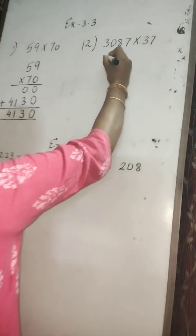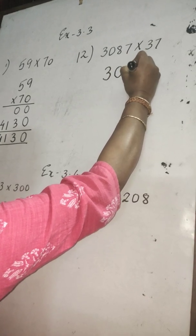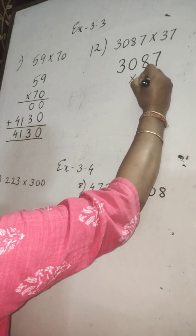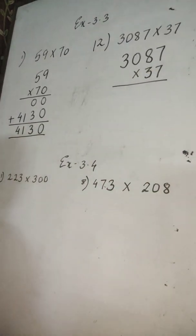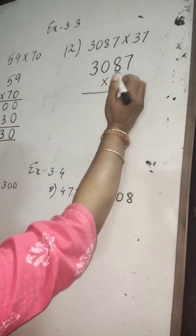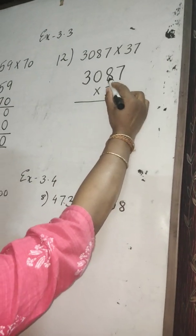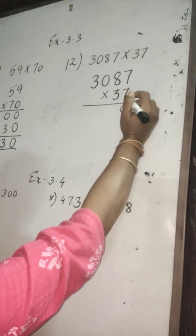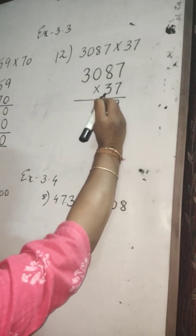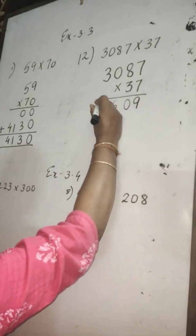Another example: number 12, you can see 3087. Now multiply with the two-digit number. First, multiply with the number in the ones place, same as the previous one. 7 sevens are 49 — write 9 and carry 4. 7 eights are 56 plus 4 is 60 — write 0 and carry 6. 7 times 0 is 0 plus 6 is 6. 7 threes are 21.